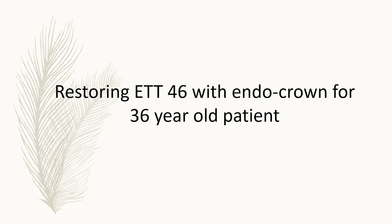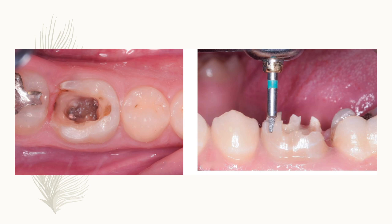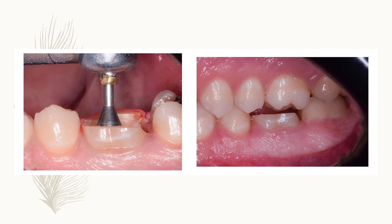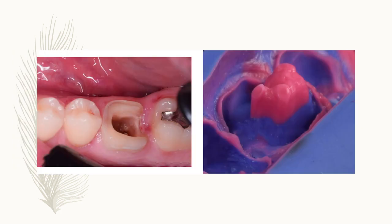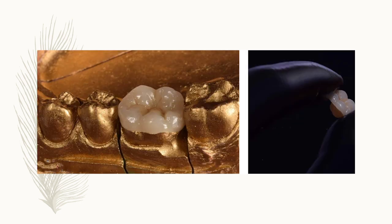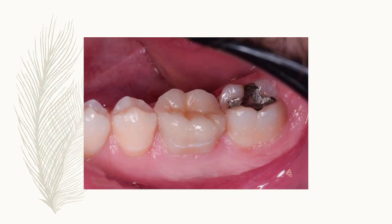Another case: restoring endodontically treated tooth 36 with an endocrown for a 36-year-old patient. The tooth was indicated for endocrown, and a bur was used to prepare guide grooves for the occlusal surface. A wheel bur was used to prepare the cervical sidewall or butt joint. After preparation the sidewall and cervical margins were polished and finished. Impression was taken using the double impression technique with putty and light body additional silicone. The endocrown was fabricated on the working cast and then cemented in the mouth.